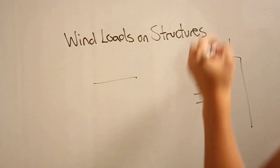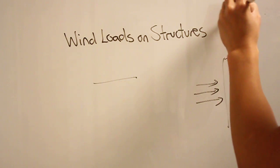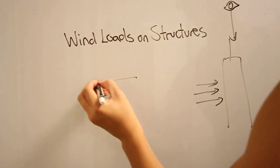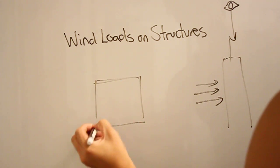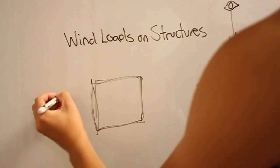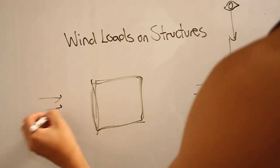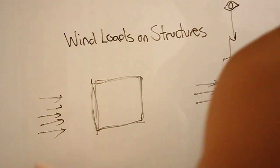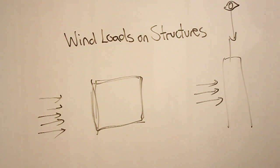So if we draw this from the top, essentially a cut from plan, and this is a square building, and the wind is coming from this direction, let's try to model exactly where that wind is going once it interacts with this structure.